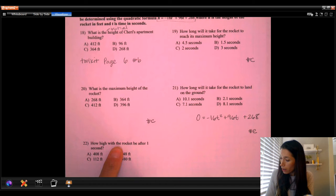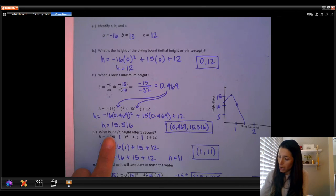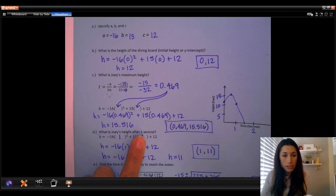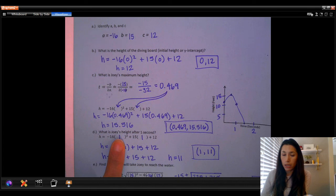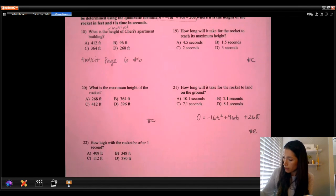And then our last question, how high will the rocket be after one second? If we look back at our toolkit, what is Joey's height after one second? We're using the same process that we did for this question by plugging in one for our time. So that would be question D on the toolkit.